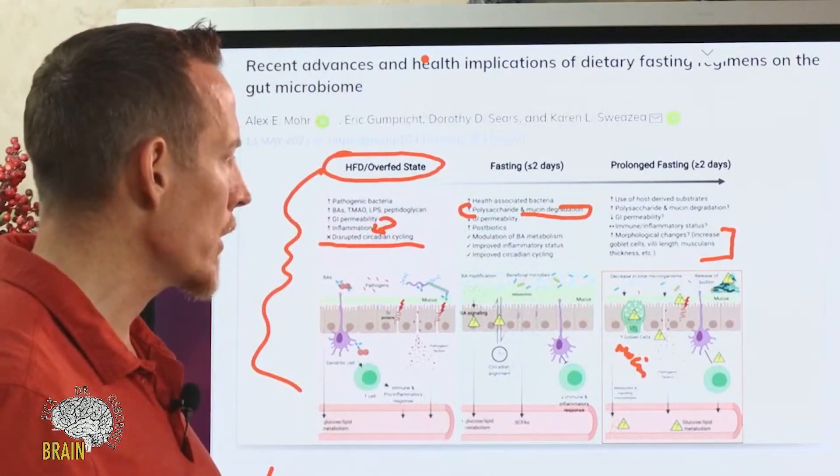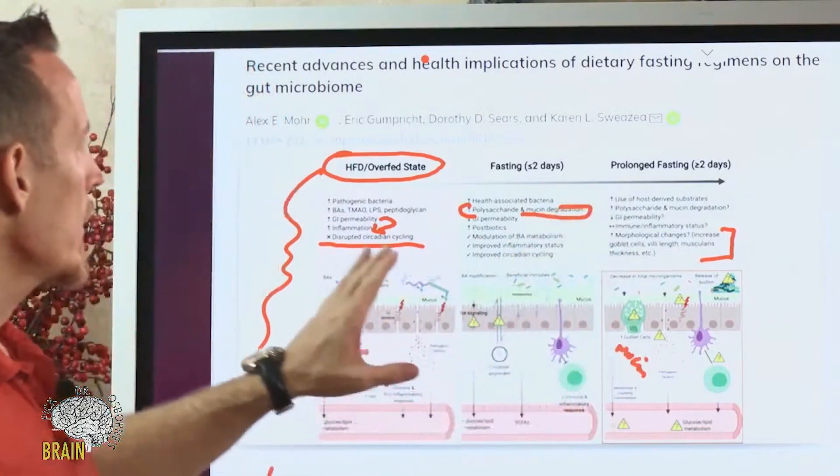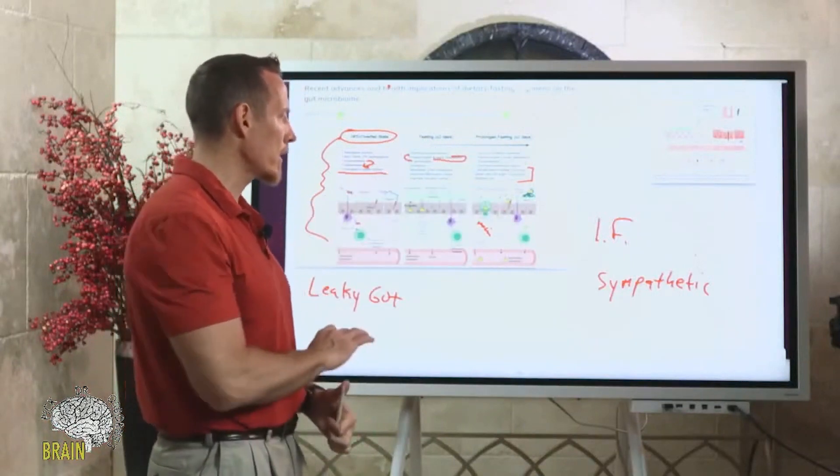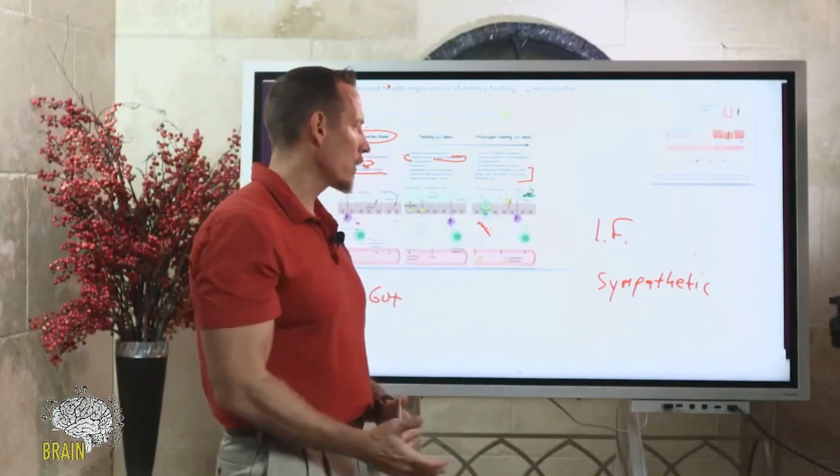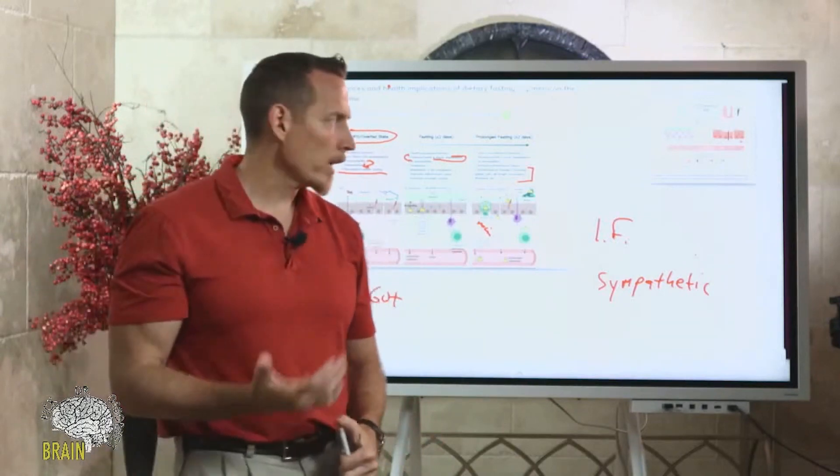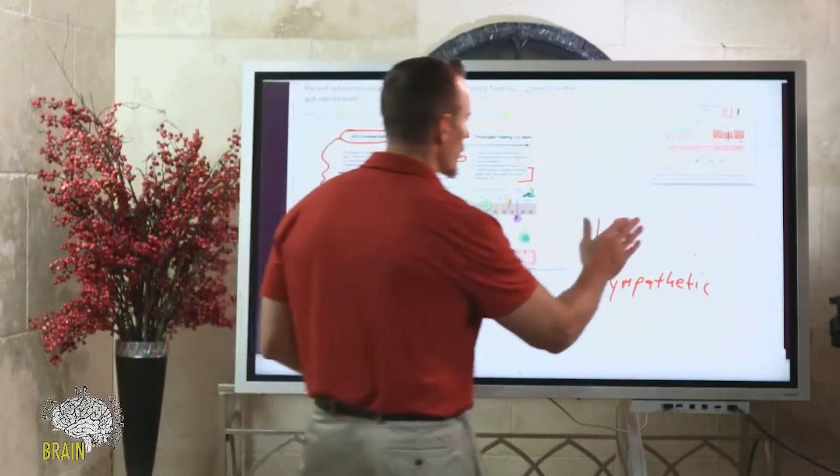Longer-term fasting has many more changes. There are certain changes that occur under two days, and certain changes that if you prolong that fasting out even further can give you even greater benefits. Now a one and a three day fast—remember what we said—those are calorie restriction fasts.